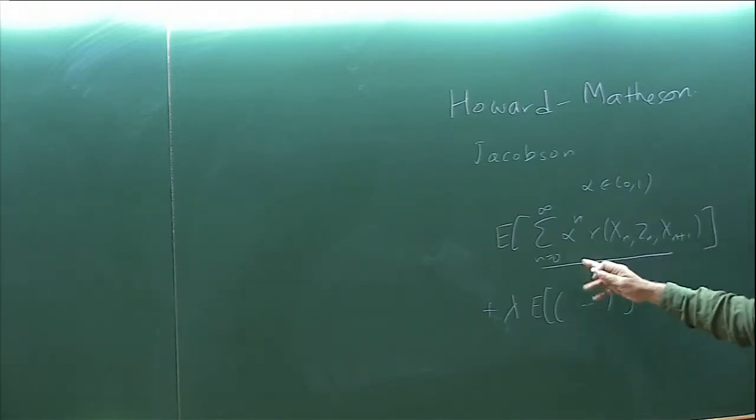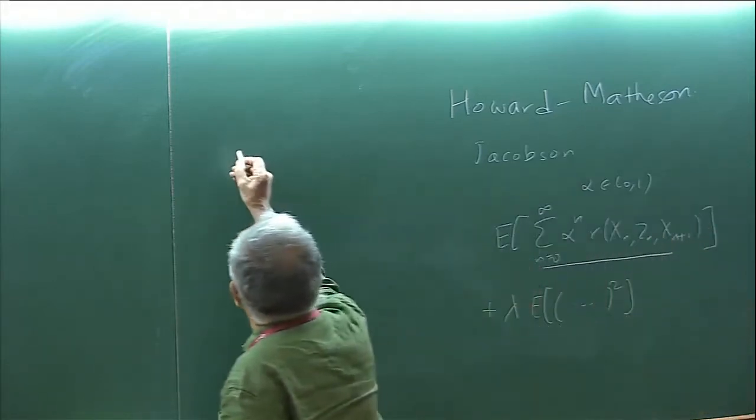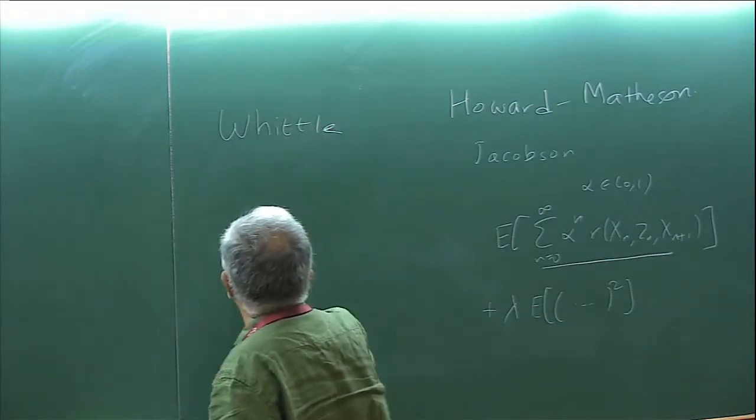That's not true here. This cost I could have split from n equal to zero to say 10 and 11 onwards. 11 onwards, it looks something similar to what I had. I just had to pull out alpha raise to 10 out. But the flavor is the same. That's not true once you have this.